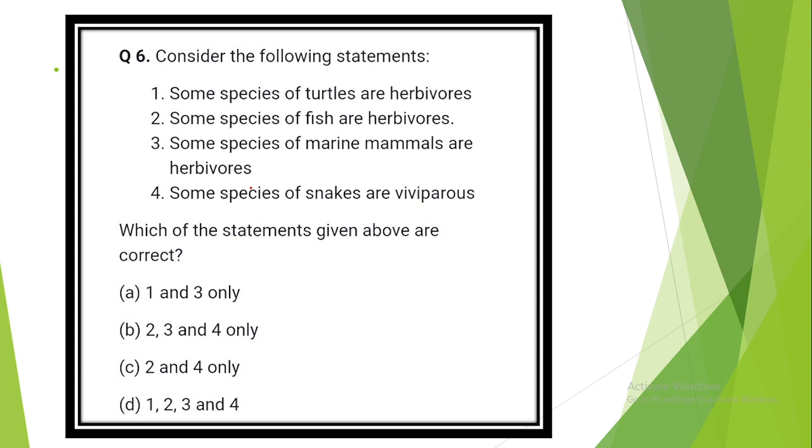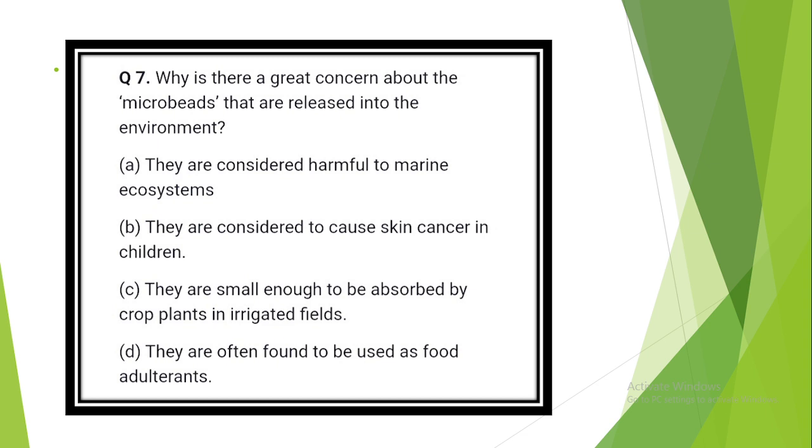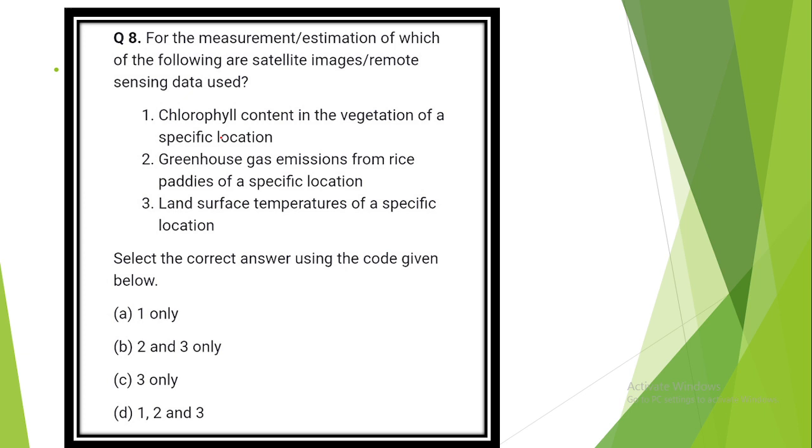Which of the following are in Agasthyamalai Biosphere Reserve? Option A: Neyyar, Peppara, Shendurney Wildlife Sanctuary and Kalakkad Mundanthurai Tiger Reserve. Question number 6. Consider the following statements. The answer is option D: All are correct. Some species of turtles are herbivorous. Some species of fish are herbivorous. Some species of marine mammals are herbivorous. Some species of snakes are viviparous. Why is there great concern about microbeads released into the environment? The answer is option A: They are considered harmful to marine ecosystem.